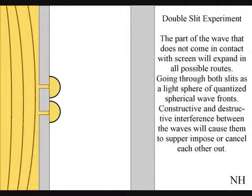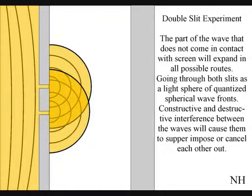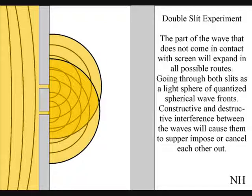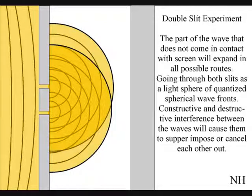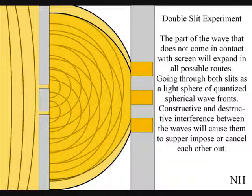The part of the wave that does not come in contact with the screen will expand in all possible routes, going through both slits as two light spheres of quantised wave fronts. Constructive and destructive interference between the waves will cause them to superimpose or cancel each other out. When this wave particle function comes in contact with the screen, it will collapse, creating moments of time and quantum particles in the shape of an interference pattern.